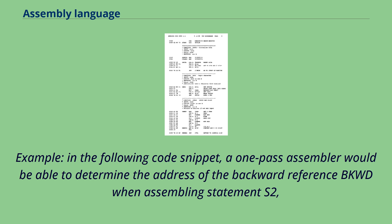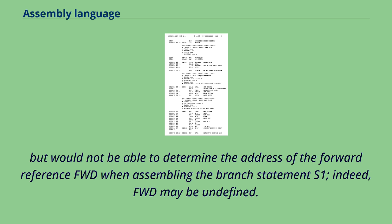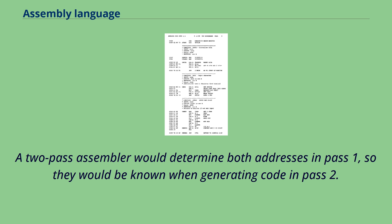Later computers with much larger memories had the space to perform all necessary processing without such re-reading. The advantage of the multi-pass assembler is that the absence of errata makes the linking process faster. In the following code snippet, a one-pass assembler would be able to determine the address of the backward reference BKWD when assembling statement S2, but would not be able to determine the address of the forward reference FWD when assembling the branch statement S1. A two-pass assembler would determine both addresses in pass 1, so they would be known when generating code in pass 2.